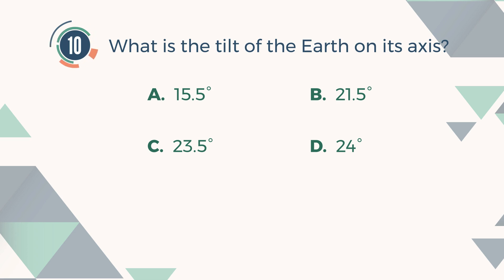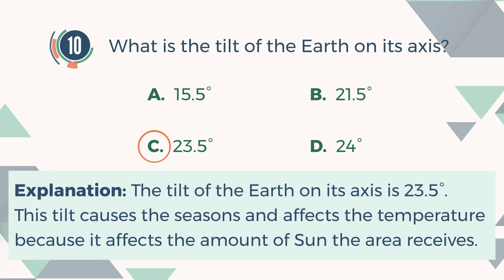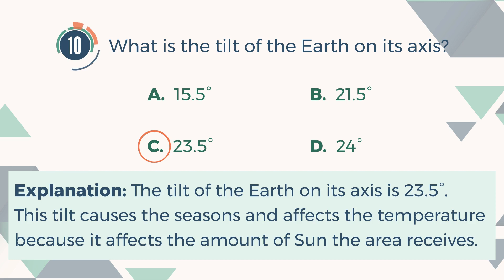The correct answer is C. 23.5 degrees. Explanation: The tilt of the earth on its axis is 23.5 degrees. This tilt causes the seasons and affects the temperature because it affects the amount of sun the area receives.